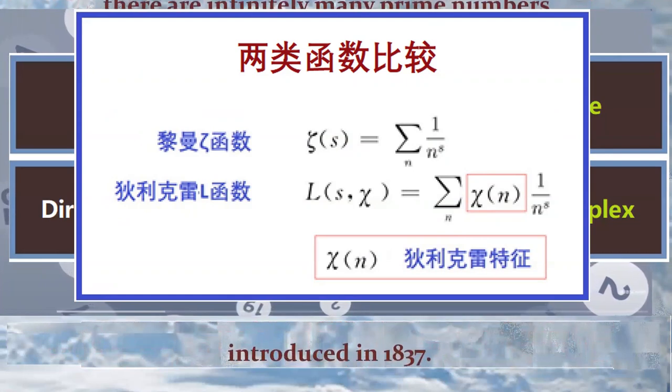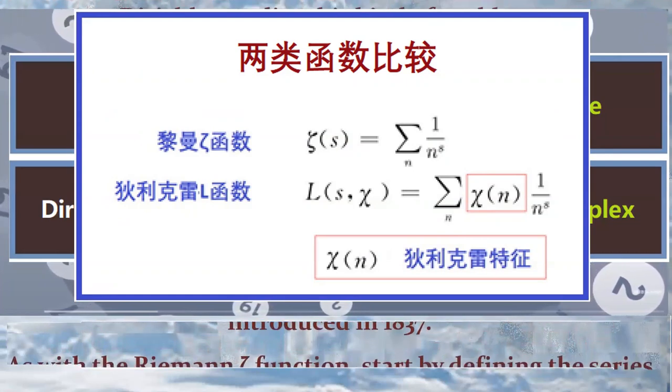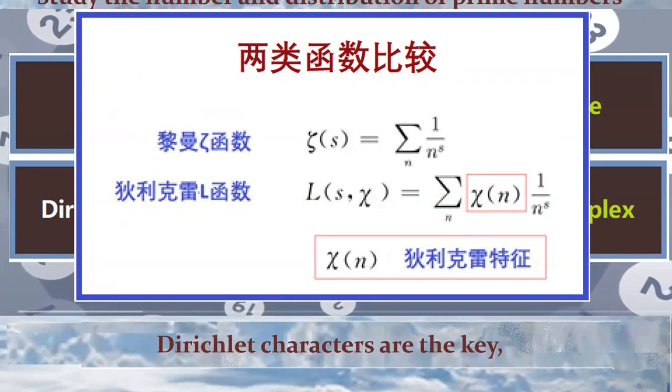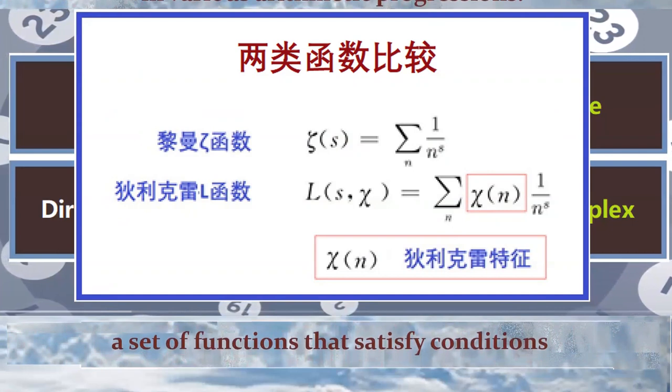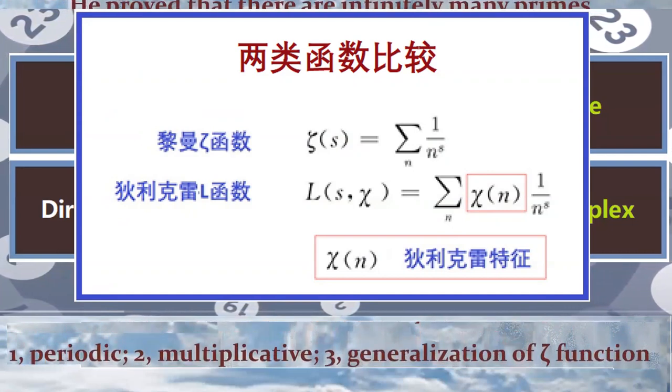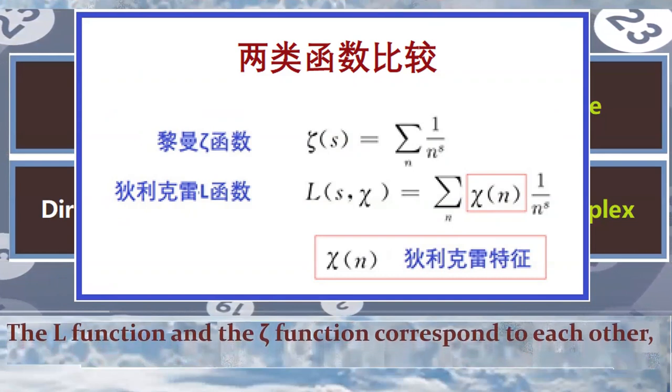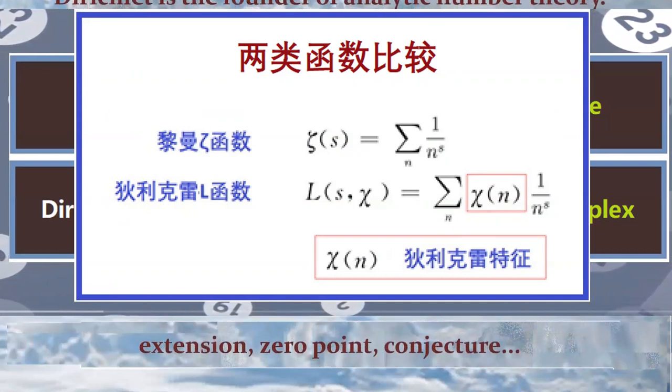The Dirichlet L function and Dirichlet character chi was introduced in 1837. As with the Riemann zeta function, start by defining the series. Dirichlet characters are the key, a set of functions that satisfy conditions: 1. Periodic, 2. Multiplicative, 3. Generalization of zeta function.